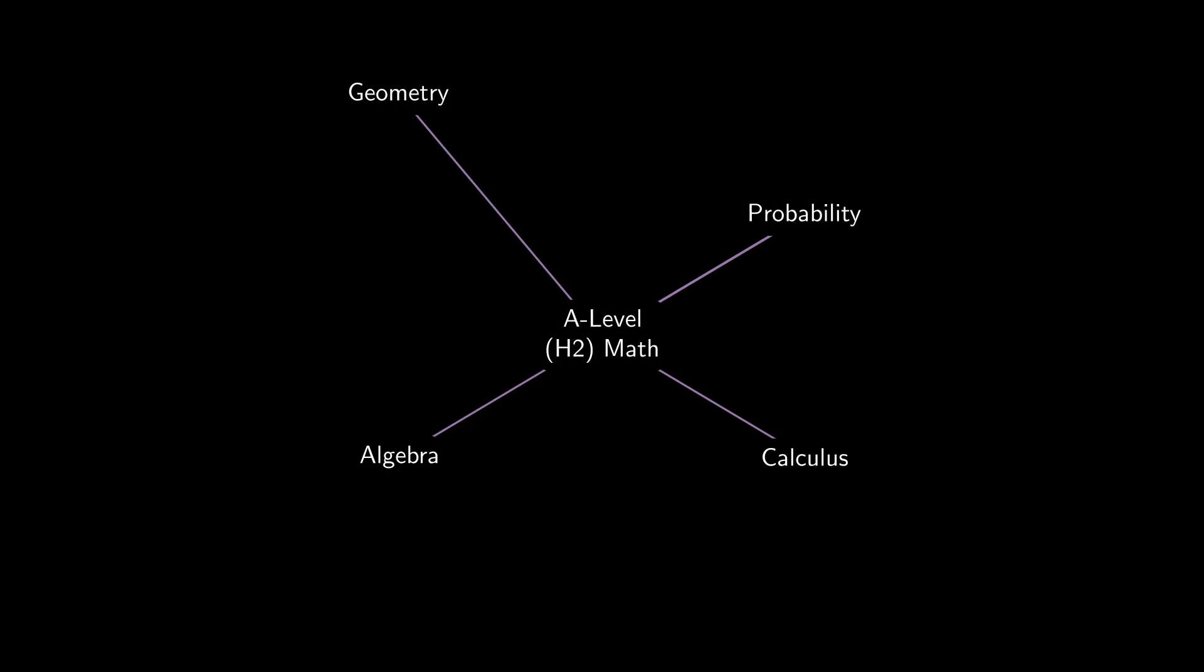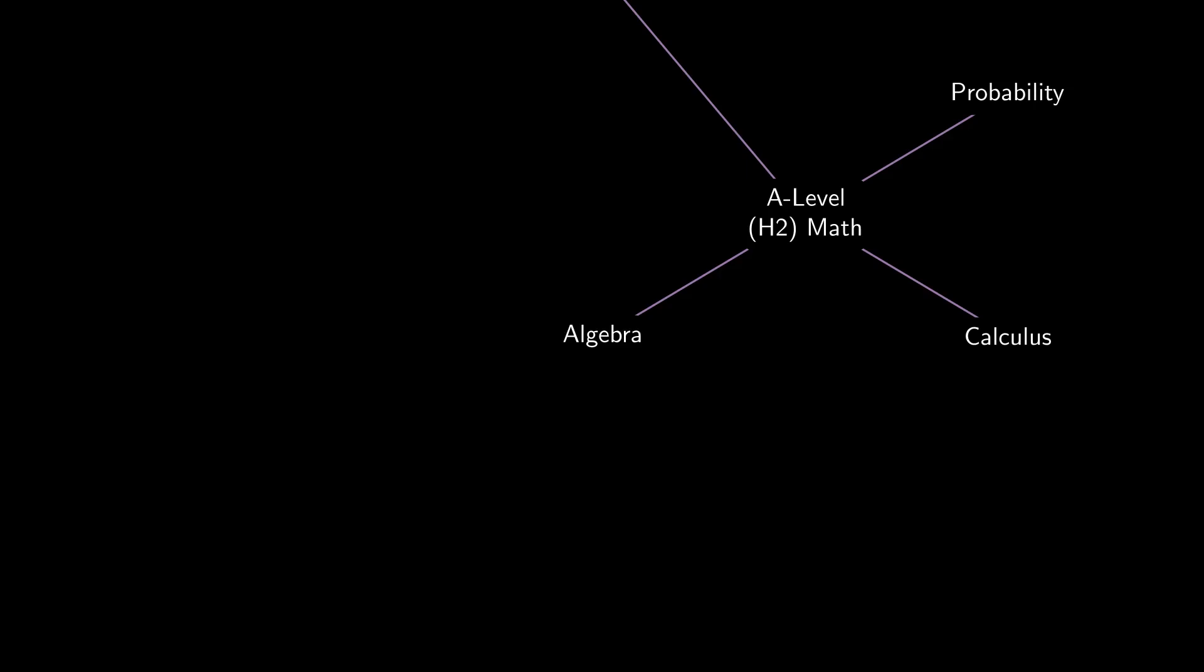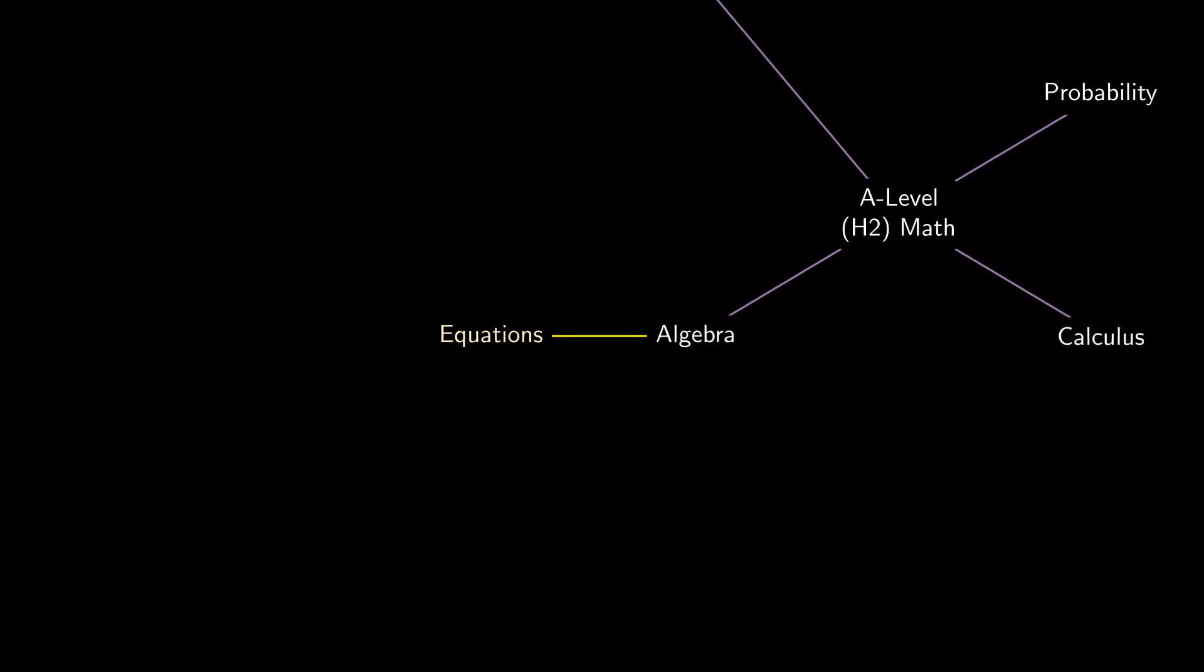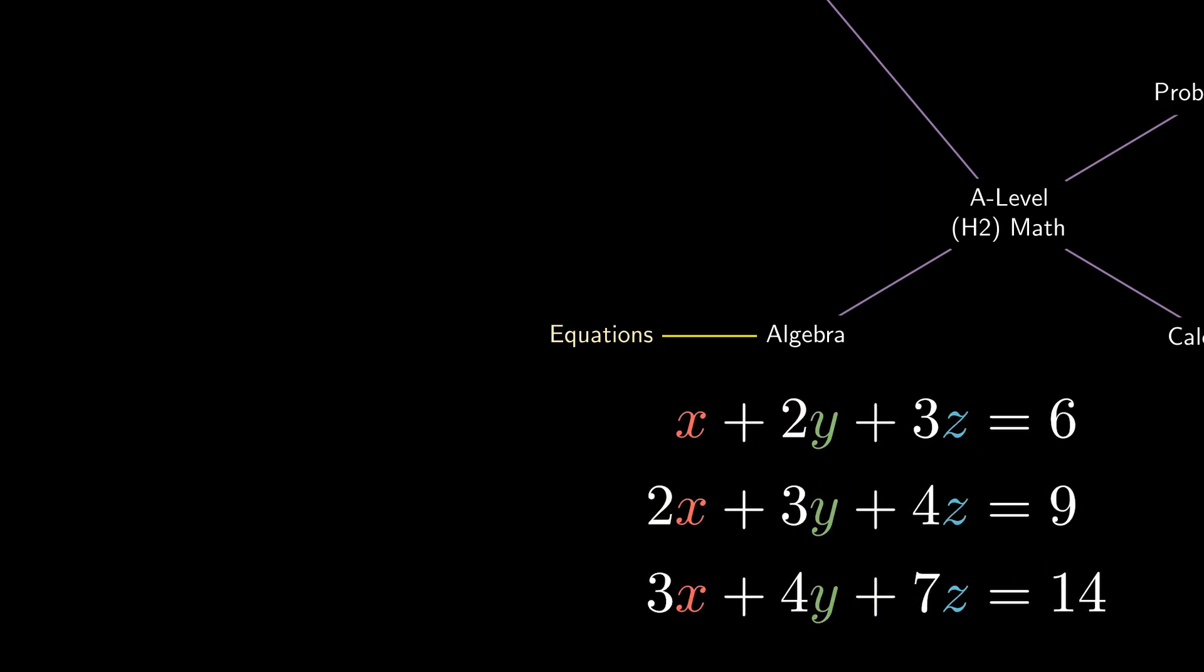The closest link between A-level mathematics and secondary school mathematics is algebra, and the closest idea in algebra to what we're familiar with is solving equations. In secondary school, we are very familiar with solving two equations in two unknowns. A natural question to ask is, can we solve three equations in three unknowns?